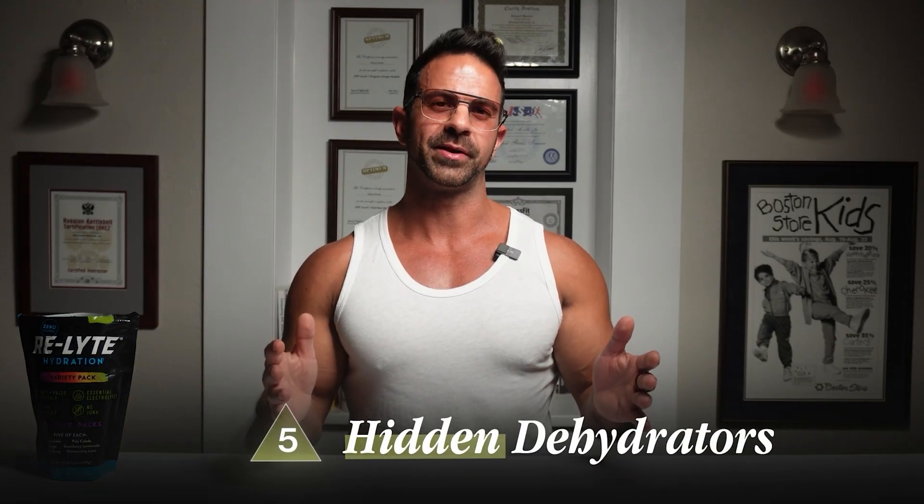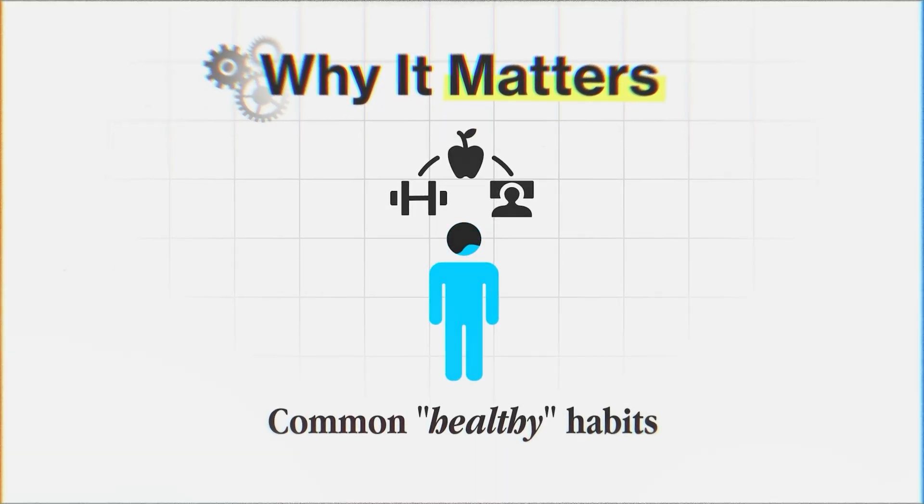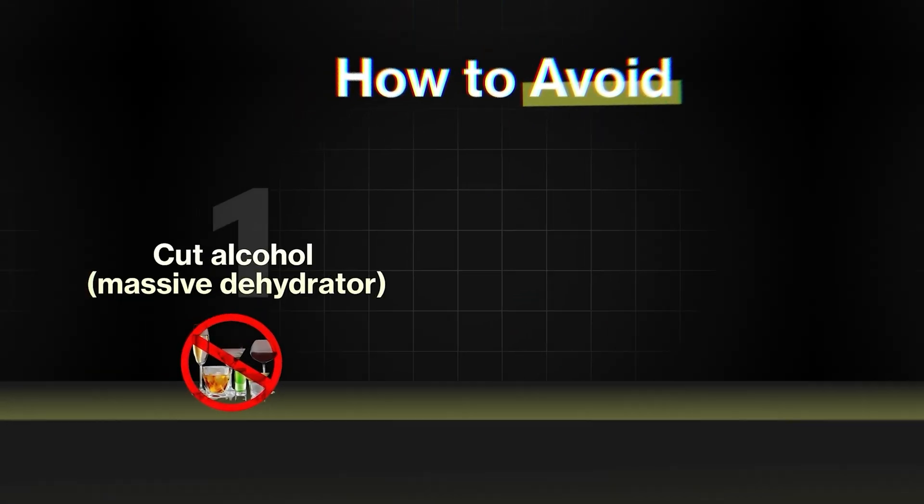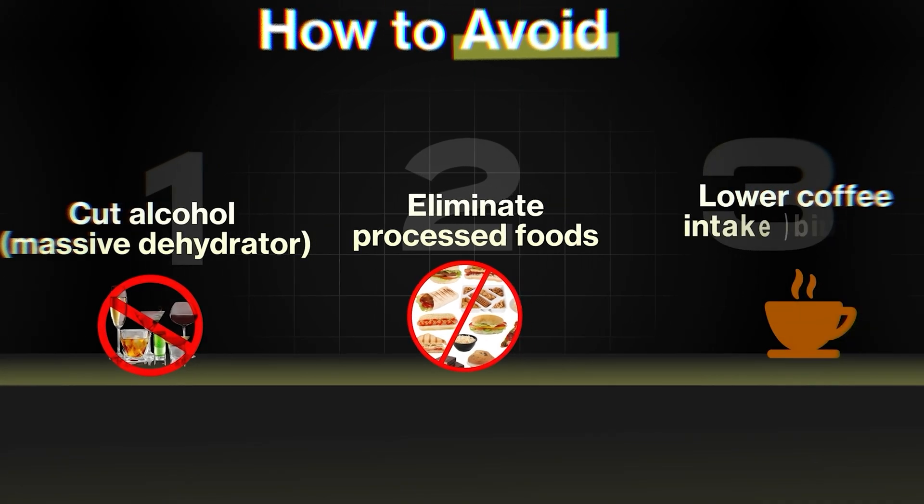Number five is hidden dehydrators. Why it matters? Because common healthy habits are secretly destroying your hydration levels. How to avoid? Cut alcohol. It's a massive dehydrator. Eliminate processed foods. Lower coffee intake.